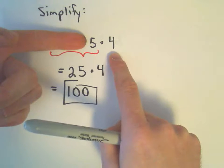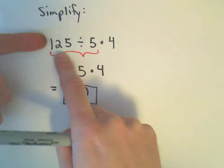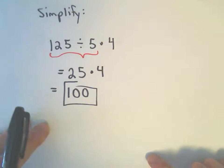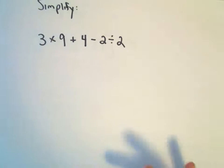Notice if you did the multiplication, 5 times 4, you would get 20. And then 125 divided by 20, you'd get something much different. So another example.